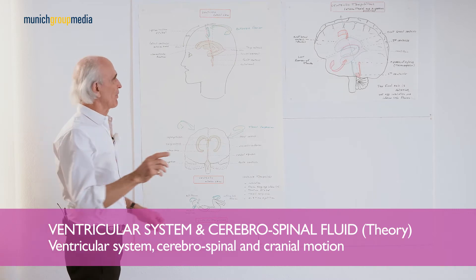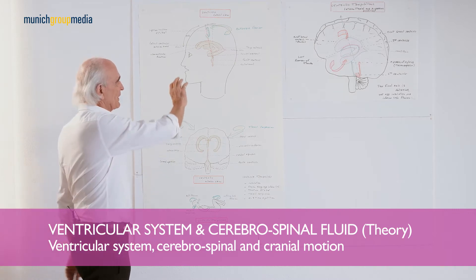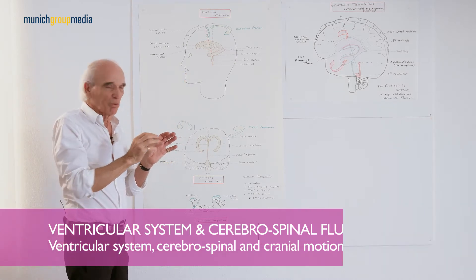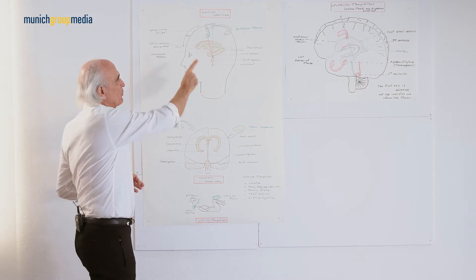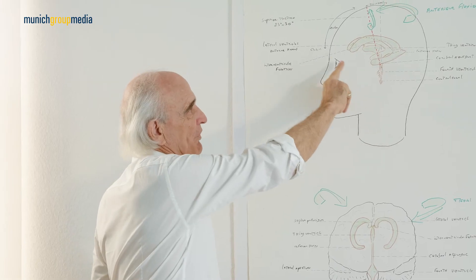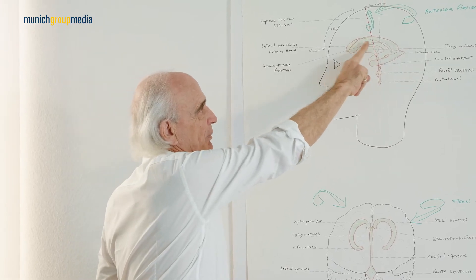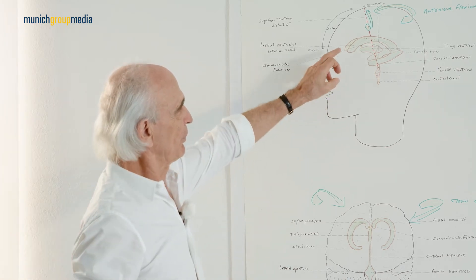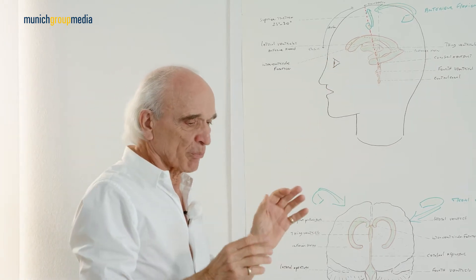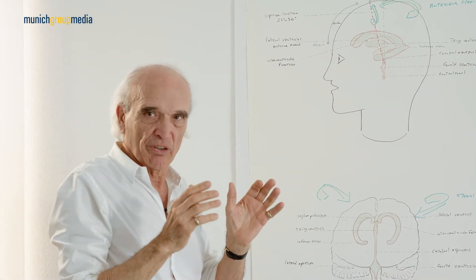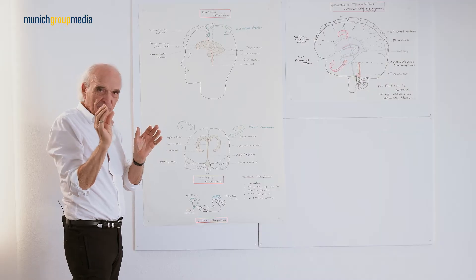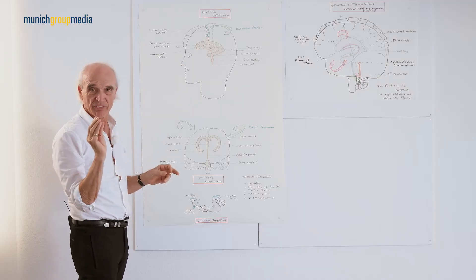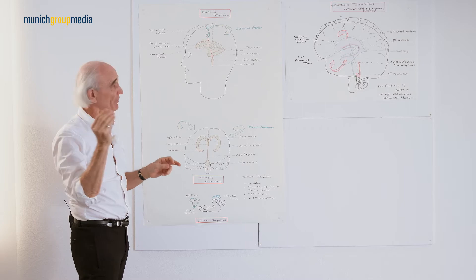Inside the ventricle you have billions of cilia which move about 10 times a second to make more of this liquid. And of course they are responsible also for the pressure of the ventricle. When there is some tumour inside the brain you can see the size of the lateral ventricle — they are not the same.